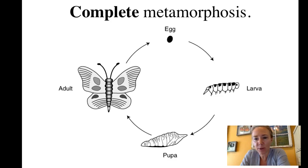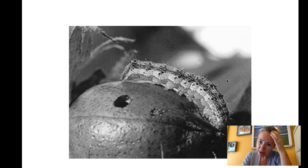For example, in ladybugs or lady beetles, the adult beetle is actually smaller than the larva, which can be very alarming. A lot of people see ladybug larvae — which are actually quite beneficial because they eat insects in their larval stage — and think, what is this awful bug? I'm going to get rid of it.